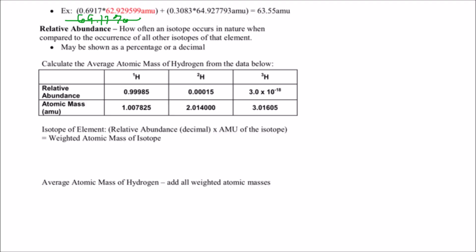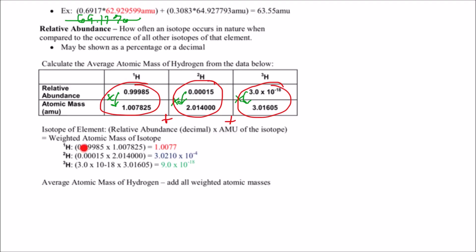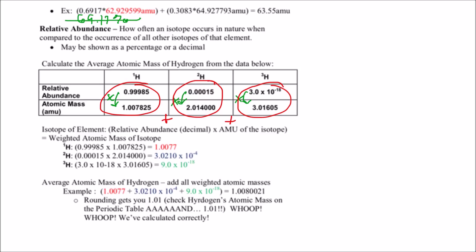To calculate the average atomic mass of hydrogen, multiply the relative abundance by the atomic mass for each isotope. Divide any percentage by 100 first to get a decimal. Do this multiplication for hydrogen-1, hydrogen-2, and hydrogen-3, then add all three products together.